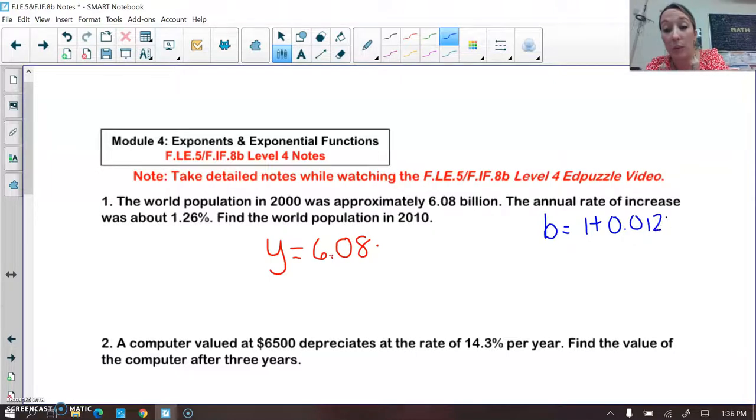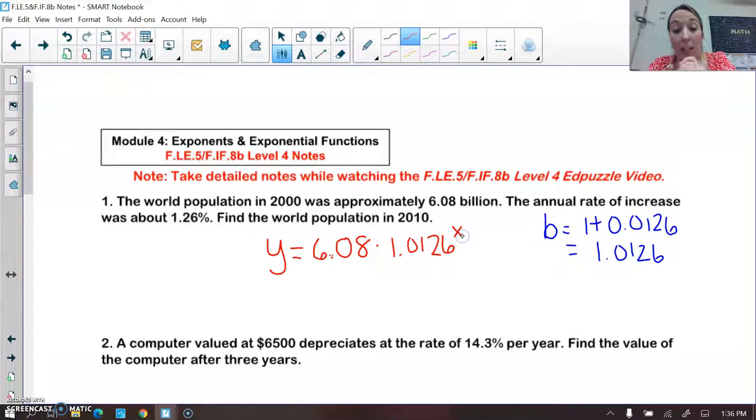So this would be my percent expressed as a decimal. So my b value is 1.0126, and that's what's going to go in my equation. And that will be raised to the x power.